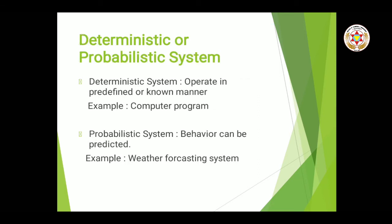Next is deterministic or probabilistic system. Deterministic means at each stage of the system, you know the condition of the system — system ki predefined condition pata hoti hai. For example, when you debug a computer program — you have created a program for sum of two numbers. Jab aap usse debug karo ge, aapko pata hota hai ki abhi x ki value kya hai, y ki value kya hai, plus karke kya result aa raha hai. If koi error aa raha hai, to aap debug kar ke check karte ho. Aapko kis stage pe us ki value kya hai, you know that — that is deterministic system.